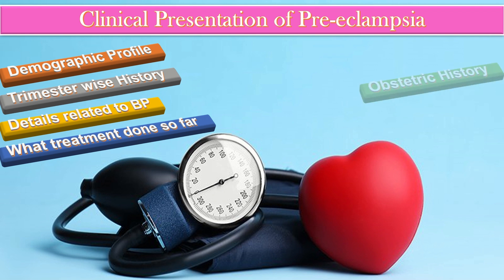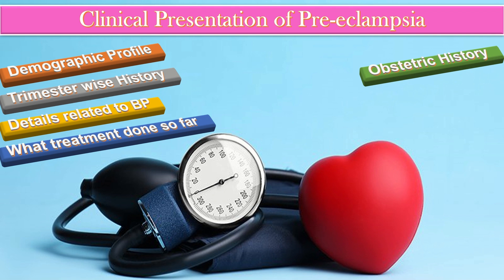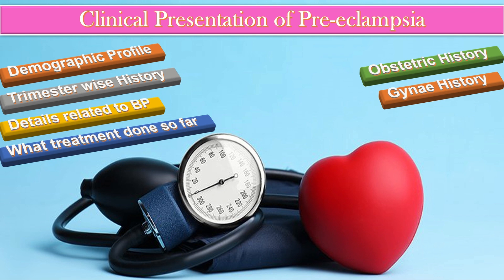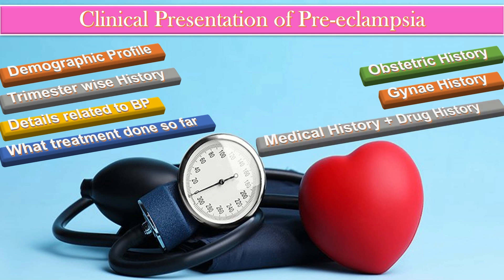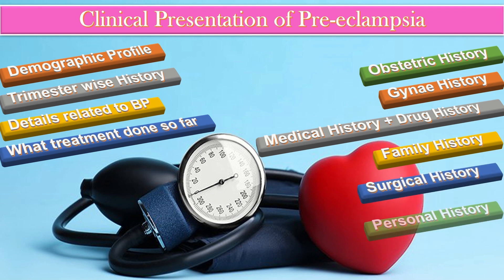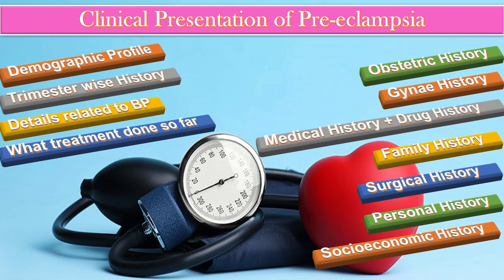In the obstetric history, ask about history of PIH or preeclampsia in previous pregnancies, at what gestation it occurred, what treatment was given, frequency of antenatal visits, ultrasound scans done, and mode of delivery in previous pregnancies. In the medical history, specifically ask about diabetes and autoimmune diseases. Also take drug history, family history of raised blood pressure, surgical history, personal history, and socioeconomic history.